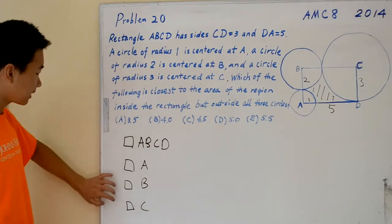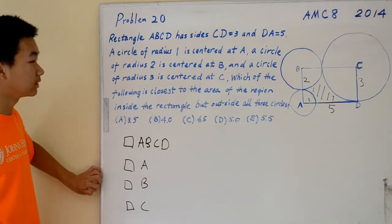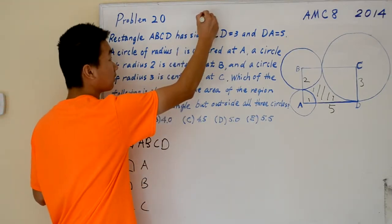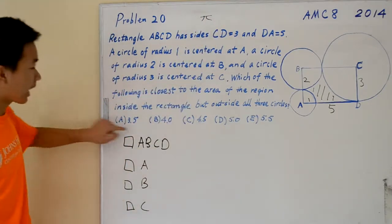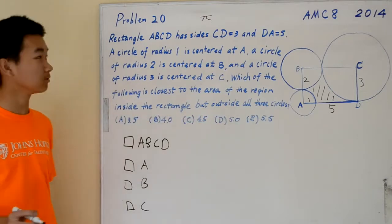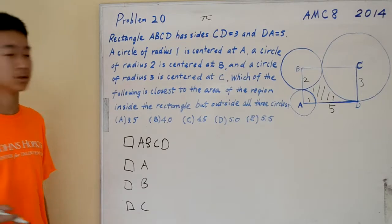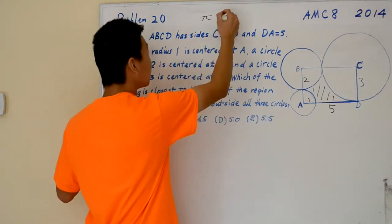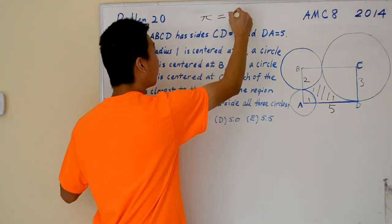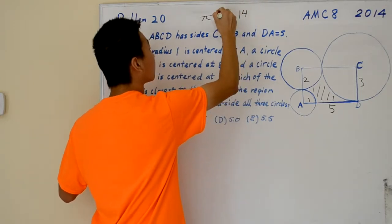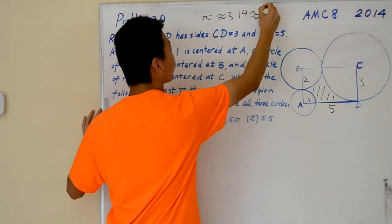Because we're going to be calculating the areas of regions of circles, we're going to need to use pi. However, since all of the answer choices are in decimal form, we'll need to use an approximation of pi. The most commonly used are 3.14 and 22 over 7.